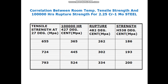This table provides the correlation between room temperature tensile strength and 100,000-hour rupture strength for 2.25 chrome-1-moly steel. The room temperature tensile strength ranges from 655 MPa to 793 MPa. Over 100,000 hours of exposure at various service temperatures — 420, 427, 482, and 538 degrees Celsius — the rupture strength drops to 365, 262, and 186 MPa, demonstrating that tensile strength drops over a range of temperature and time.